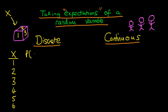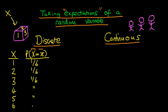Associated with each of those values is a probability that the random variable actually takes on that value. So here we write the probability that big X equals little x, where little x represents the particular value in question. The probability that X equals 1 for a fair die is 1/6, the probability that X equals 2 is 1/6, the probability that X equals 3 is 1/6, and so on all the way down to 6.